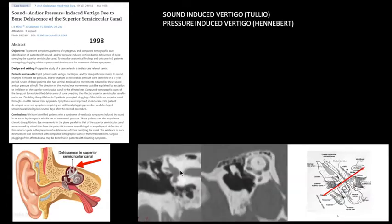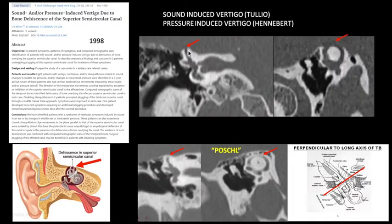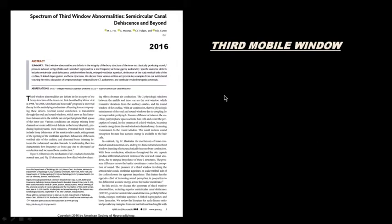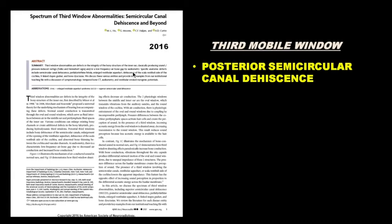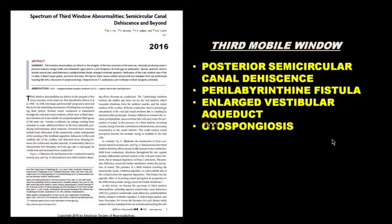Sound-induced vertigo, the Tullio phenomenon, and pressure-induced vertigo due to bone dehiscence of the superior semicircular canal was described in 1998 by a group from Johns Hopkins. In this patient with Tullio phenomenon, we can see a defect in the superior semicircular canal in the coronal plane as well as in the Pöschl plane. This entity was further studied in 2016, and a spectrum of third mobile window abnormalities was described, including posterior semicircular canal dehiscence, perilymphatic fistula, enlarged vestibular aqueduct, and otospongiosis.